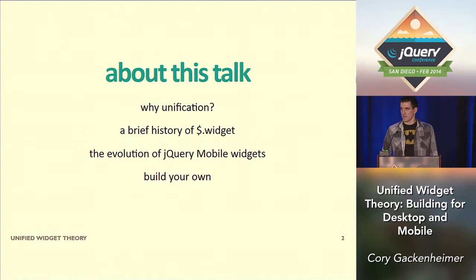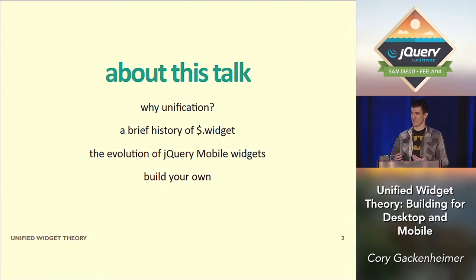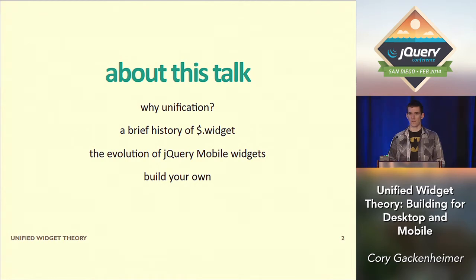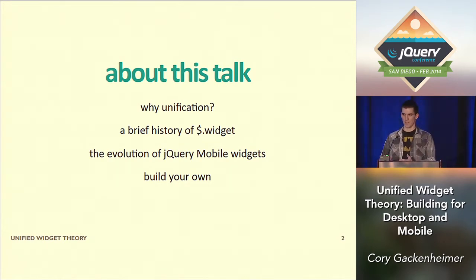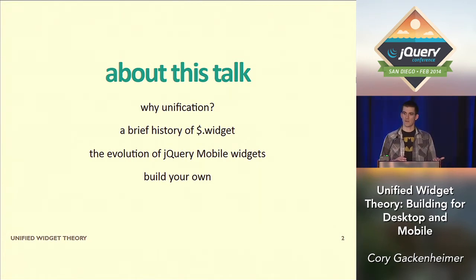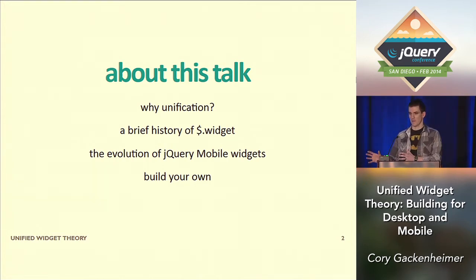So what are we going to cover in this talk? First, we're going to talk about why unification is important. We're going to take an example of what not to do and how we can avoid those pitfalls, which is going to lead us into talking about the widget factory. Then we're going to discuss how jQuery mobile's widgets have evolved, and how with jQuery mobile 1.4, the UI tabs API and widget is now part of mobile. And then we're going to build our own.